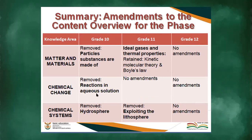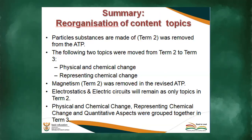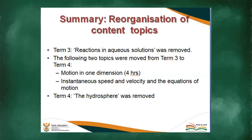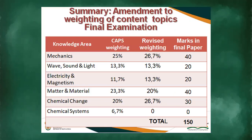The following two topics have been moved from Term Two to Term Three — that's why we've started with Chemical Change, covering physical and chemical change and representing chemical change. Chemical Systems has been completely removed, so you can remove it from your study material. Everything else, excluding what has been removed, is the structure you'll be working with.